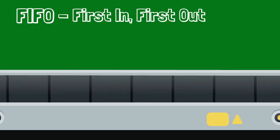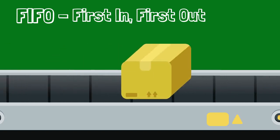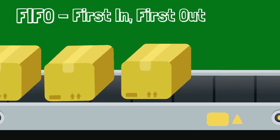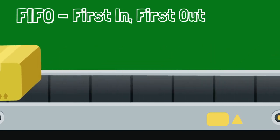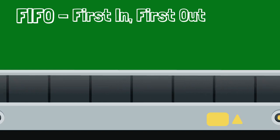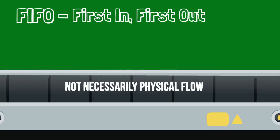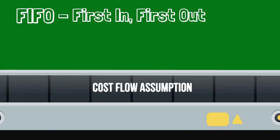FIFO stands for first in, first out, and refers to the order in which we assume inventory is sold and therefore the cost associated with each item. This cost method assumes the first items in — the oldest purchases — are the first ones sold. That doesn't mean that has to be the physical flow of goods. However, from a cost perspective, we assume the first one sold was the first one purchased when we assign a cost to it.